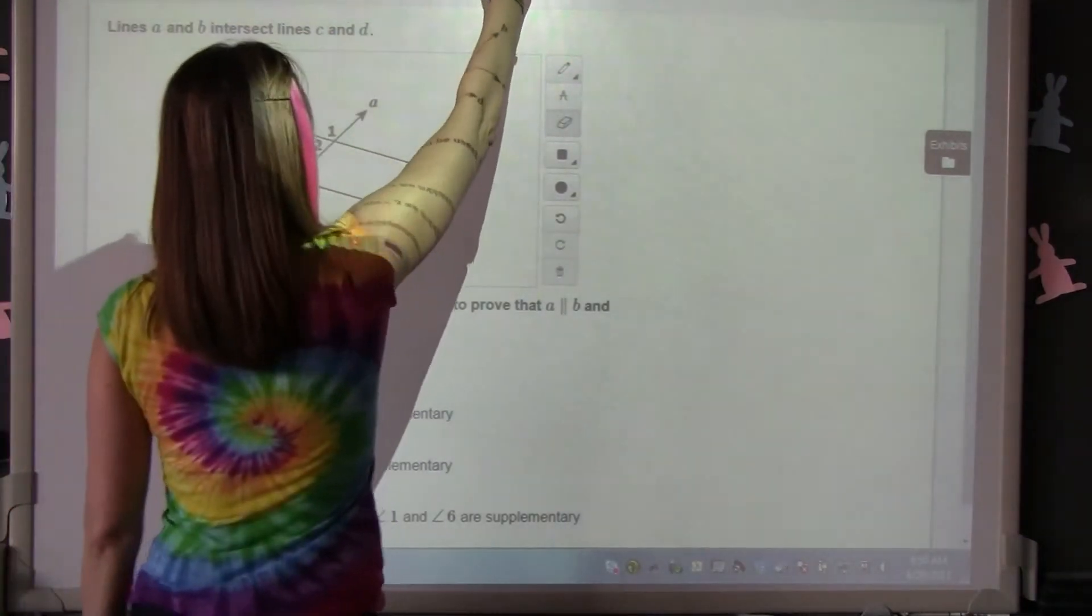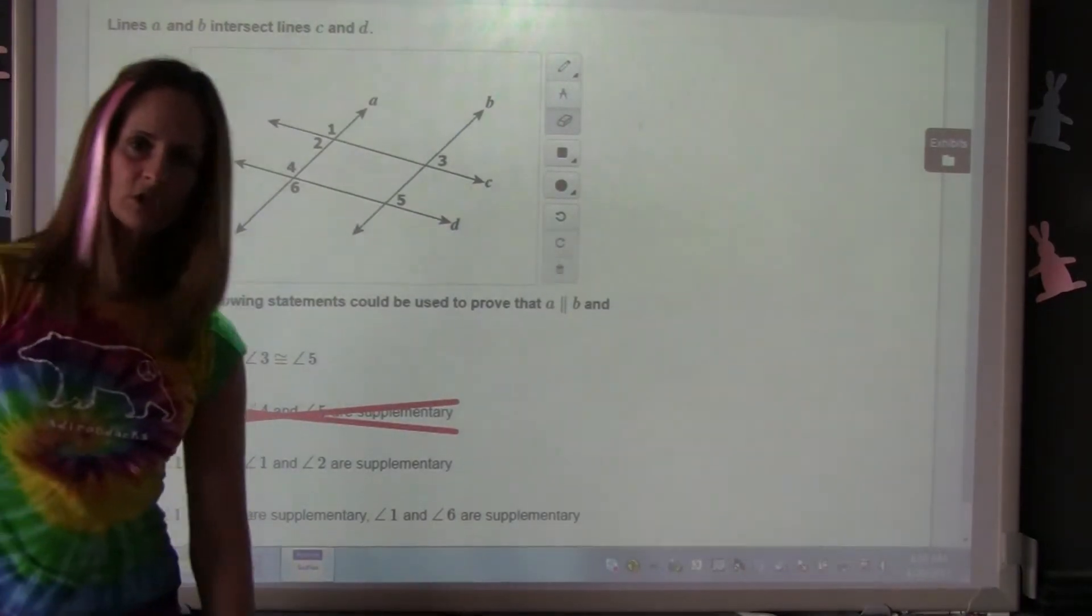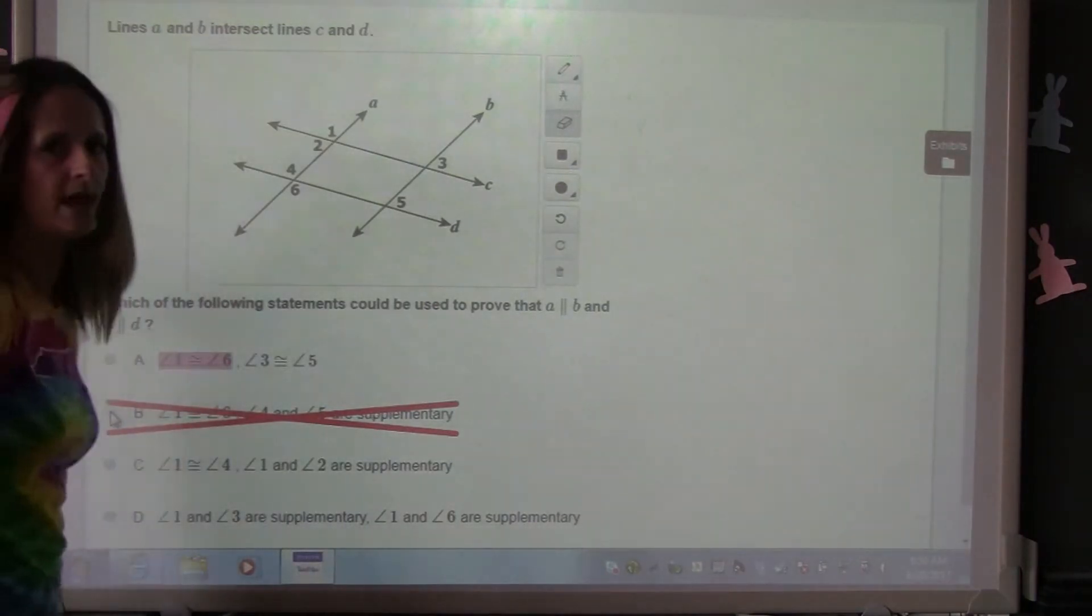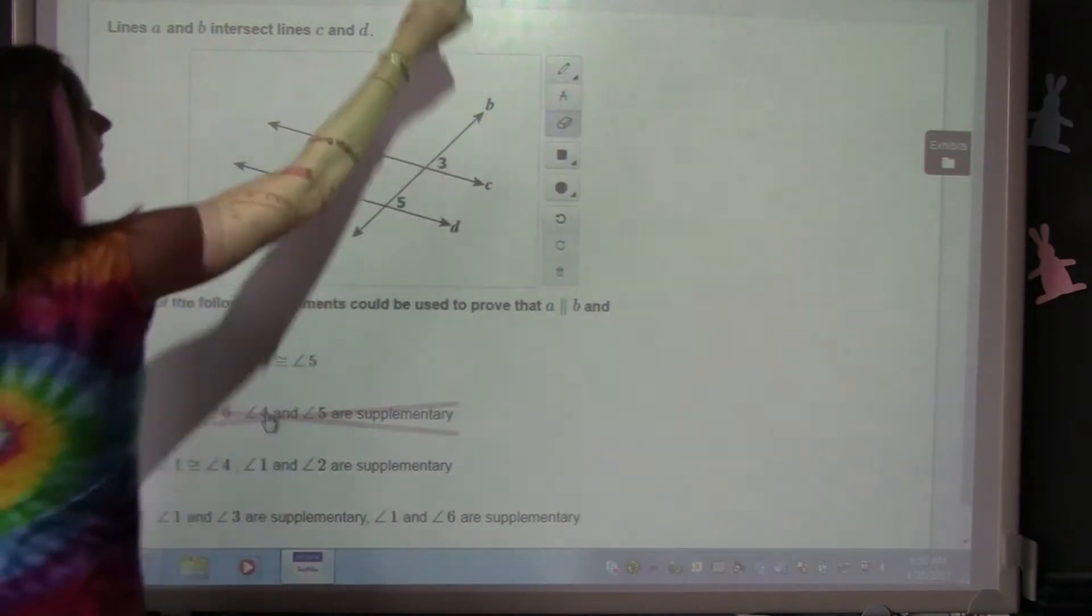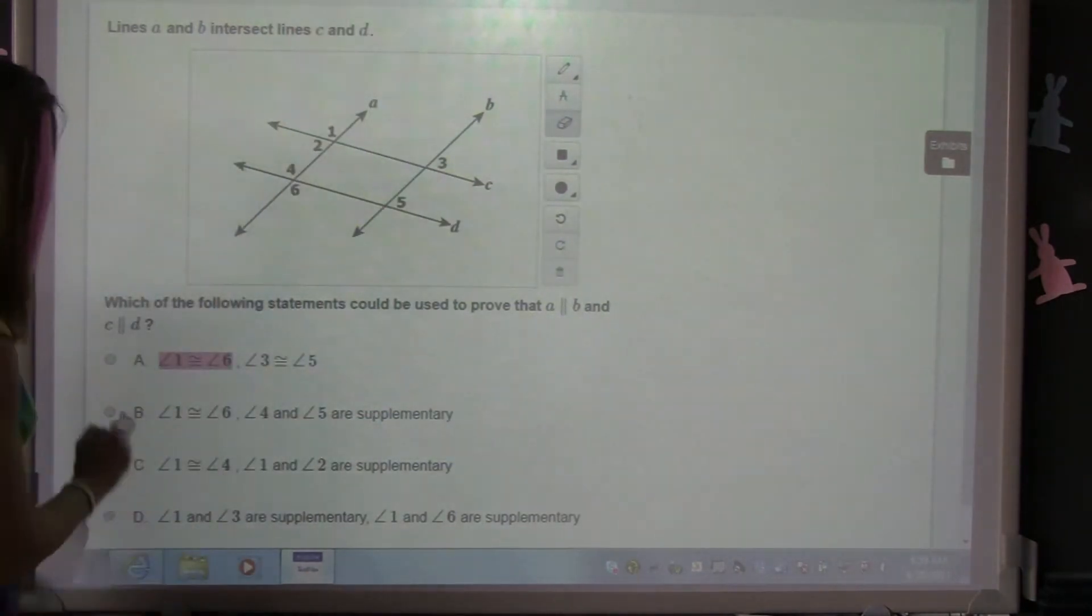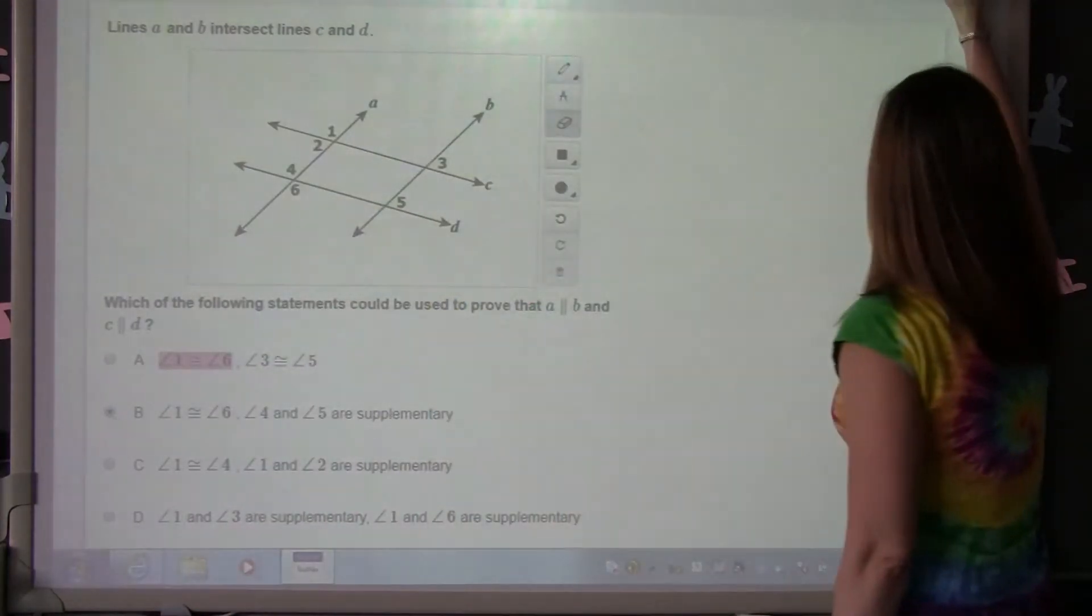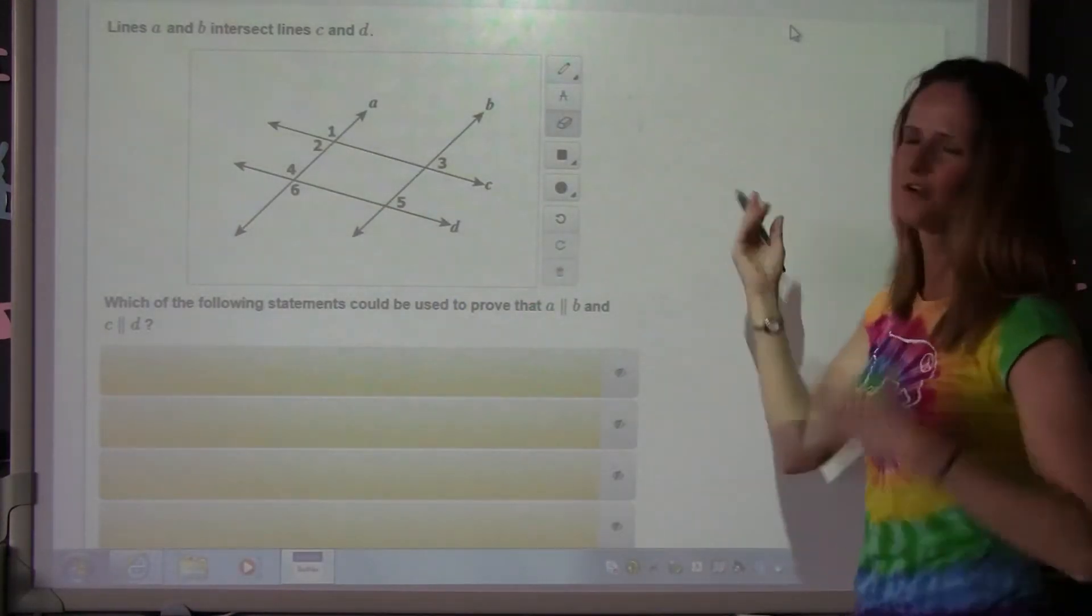Let's go to the eliminator. You probably already know how to use this. If you choose to eliminate an answer, you can't then select that as your answer. Watch if I try. Won't happen. I have to un-eliminate it, and then I can select it as an answer if I want.